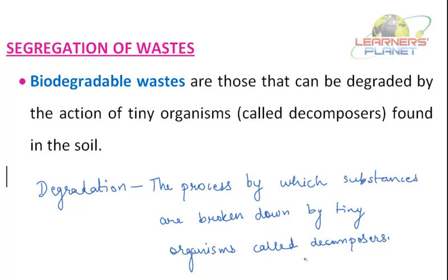The segregation of wastes includes biodegradable wastes as well as non-biodegradable wastes. Biodegradable wastes are those that can be degraded by the action of tiny organisms called decomposers found in the soil, like dead plants and animals and their products — for example paper, cloths, leaves, fruit and vegetable peels. They decay very easily, mix with the soil, and produce manure. So these are called biodegradable wastes.